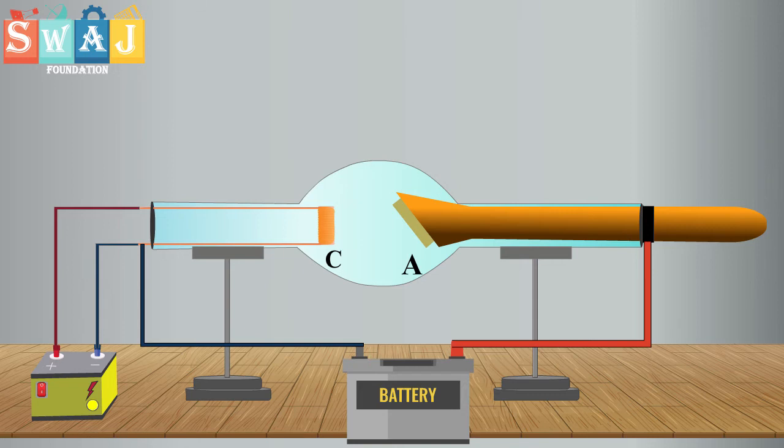Let us now see how X-rays are produced. The filament is heated by passing a suitable current through it. The filament emits electrons.